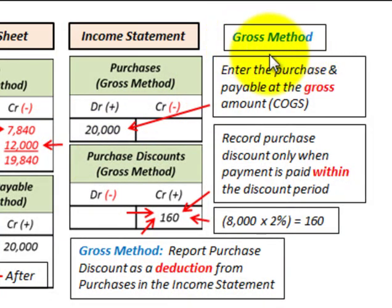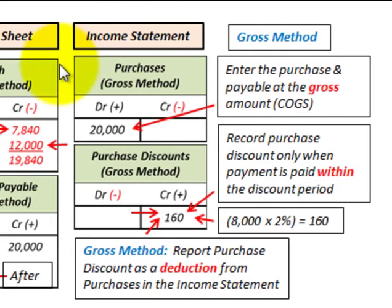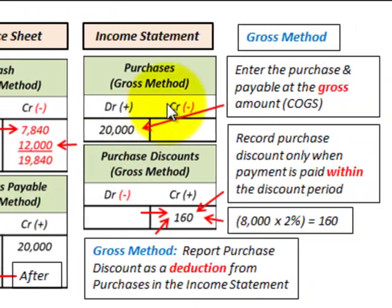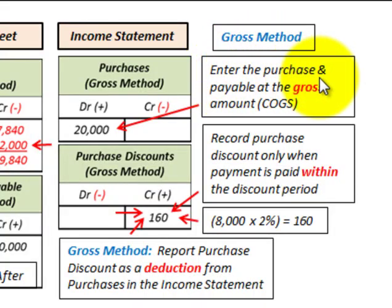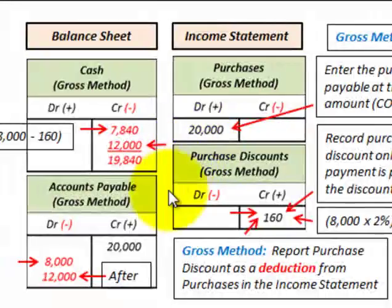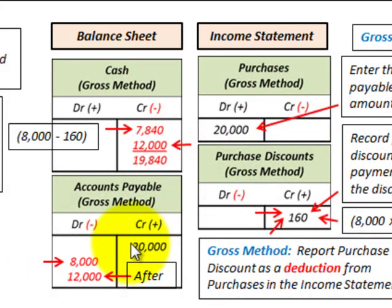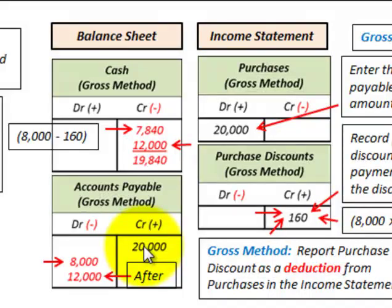For the gross method, we record the purchase and the payable at the gross amount. Our purchases account on the income statement and balance sheet accounts for cash and accounts payable are shown here. We debit our purchases account for $20,000 and credit accounts payable for $20,000, recording it at the full gross amount.